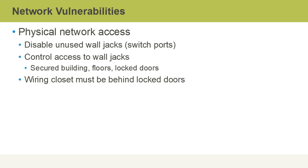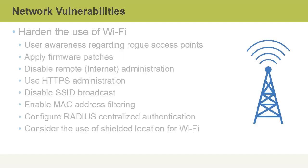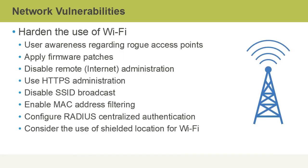Wiring closets must always be behind locked doors to prevent things like wiretapping, rerouting network connections, or plugging in rogue wireless access points. On the Wi-Fi side, there are a number of things we can do to harden the environment. The first is user awareness regarding rogue access points — a rogue access point is simply a Wi-Fi access point that isn't authorized to be on the network. A malicious user could deploy one that looks legitimate, and once users connect to it, the malicious user can see all of their traffic.